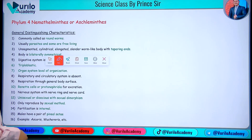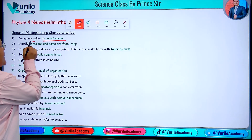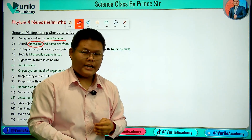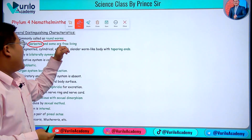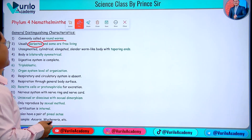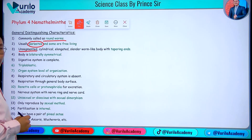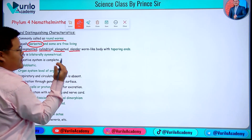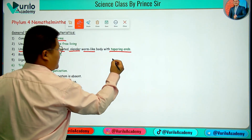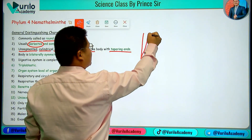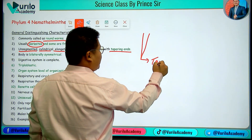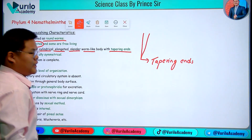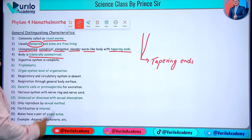First point to remember: some are parasites, living and dependent on a living host, and some are free living. Their body is unsegmented, cylindrical in shape, elongated, slender, and worm-like with tapering ends. The body is bilaterally symmetrical.